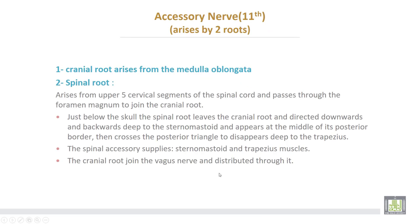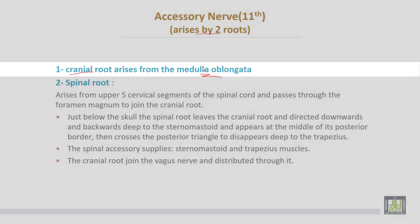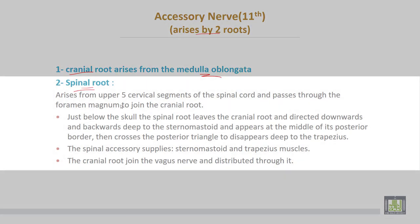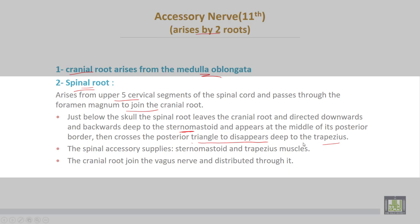The second nerve is the accessory nerve, or eleventh cranial nerve, and it arises by two roots. The cranial root arises from the medulla oblongata, while the spinal root arises from the upper five cervical segments of the spinal cord and passes through the foramen magnum to join the cranial root. Just below the skull, the spinal root leaves the cranial root and is directed downward and backward, deep to the sternomastoid muscle, appearing at the middle of its posterior border, then crossing the posterior triangle to disappear deep to the trapezius muscle. The spinal accessory supplies the sternomastoid and trapezius muscles.